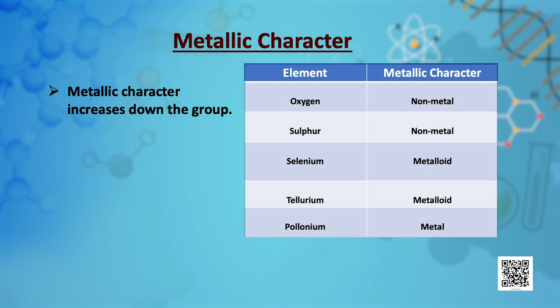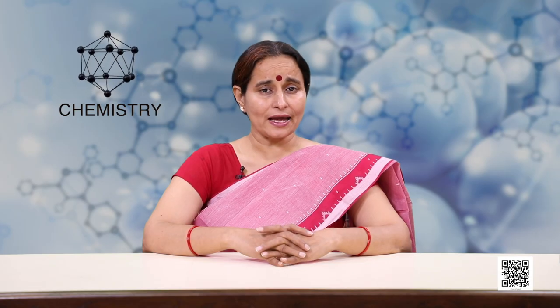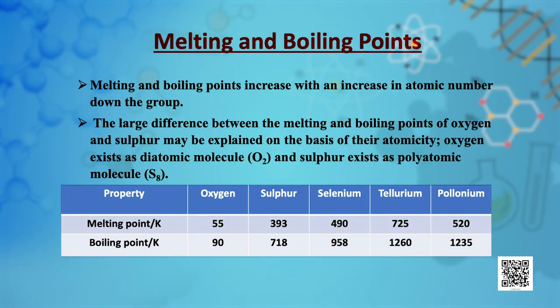The metallic character of group 16 elements increases down the group. Oxygen and sulphur are non-metals, selenium and tellurium are metalloids, whereas polonium is a metal. The melting and boiling points increase with an increase in atomic number down the group. The large difference between the melting and boiling points of oxygen and sulphur may be explained on the basis of their atomicity.